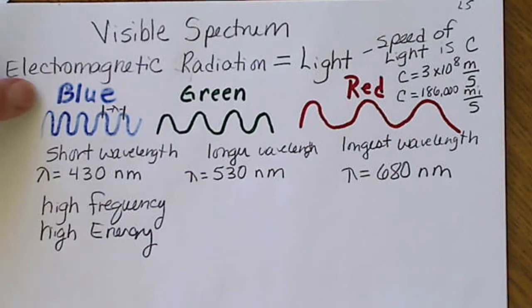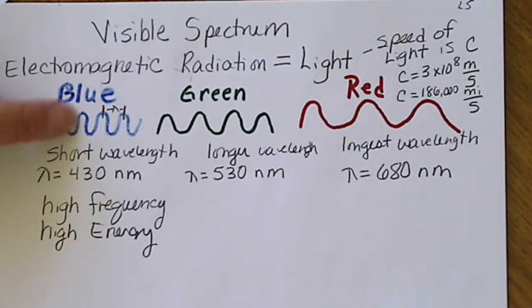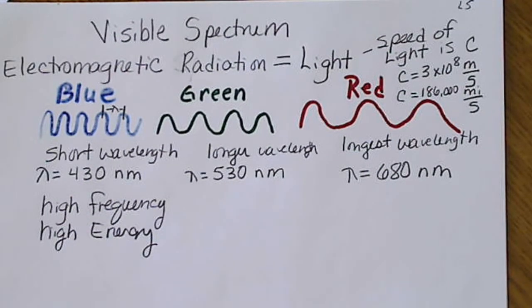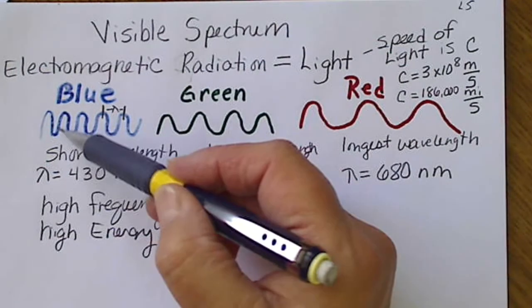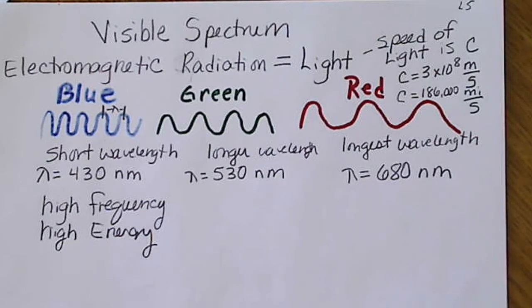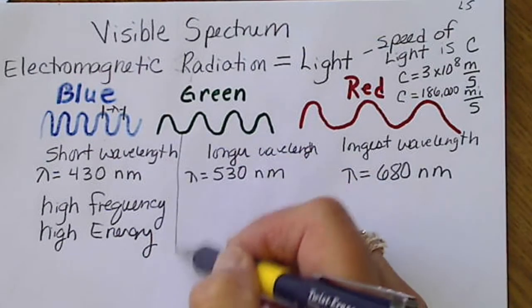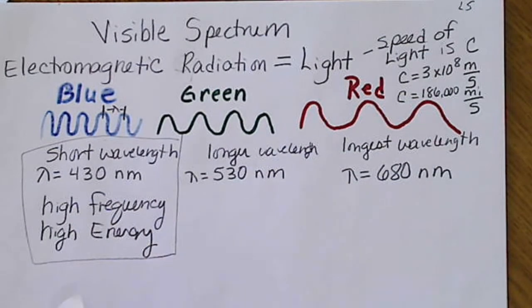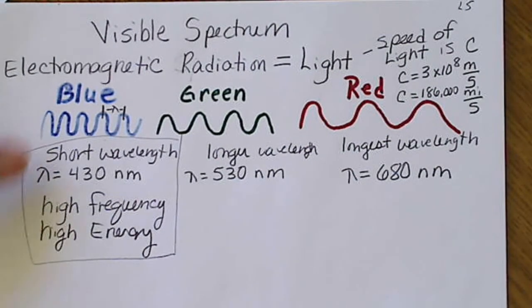Frequency is the number of times the wave bounces up and down per second. A short wave can repeat itself more times per second than a long wave. This is always the case: radiation with a short wavelength has a high frequency and high energy.